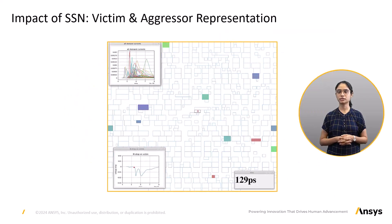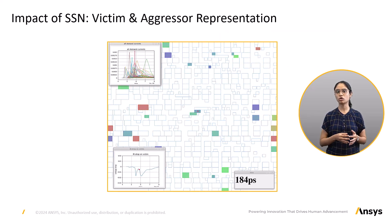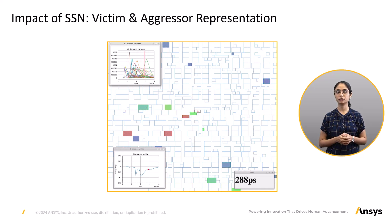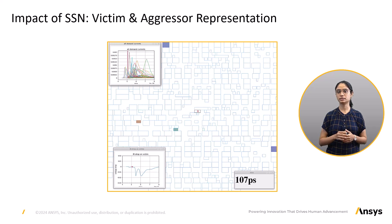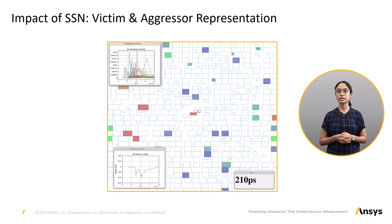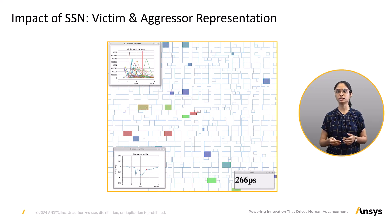Victim and Aggressor representation of dynamic analysis. To understand dynamic analysis, it's crucial to comprehend the concept of victim and aggressor instances. On a chip, a victim instance is an instance which is sensitive to impact due to a neighboring instance switching. An aggressor instance is an instance that has the potential to impact the voltage drop for the victim instance. In a dynamic scenario, there could be multiple aggressors around a victim instance. Due to various aggressor switching, there could be significant background switching noise which greatly impacts the observed instance drop. This is referred to as simultaneous switching noise.